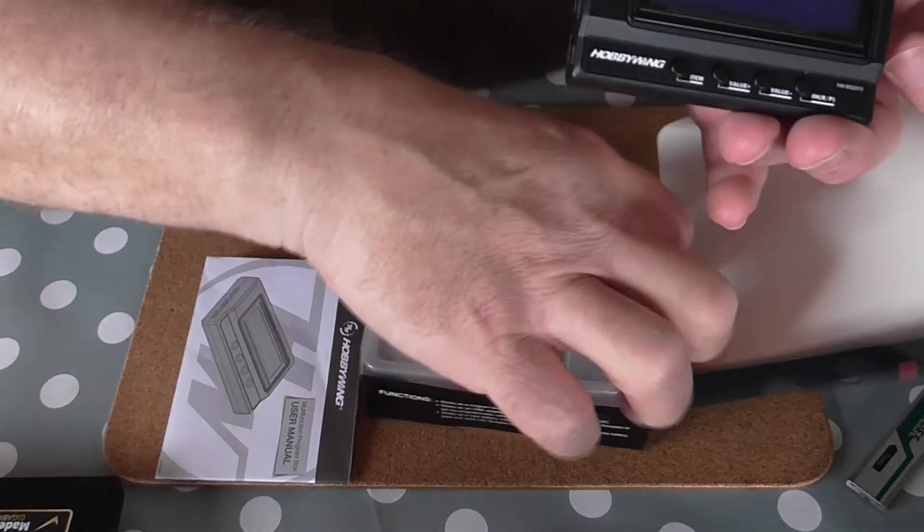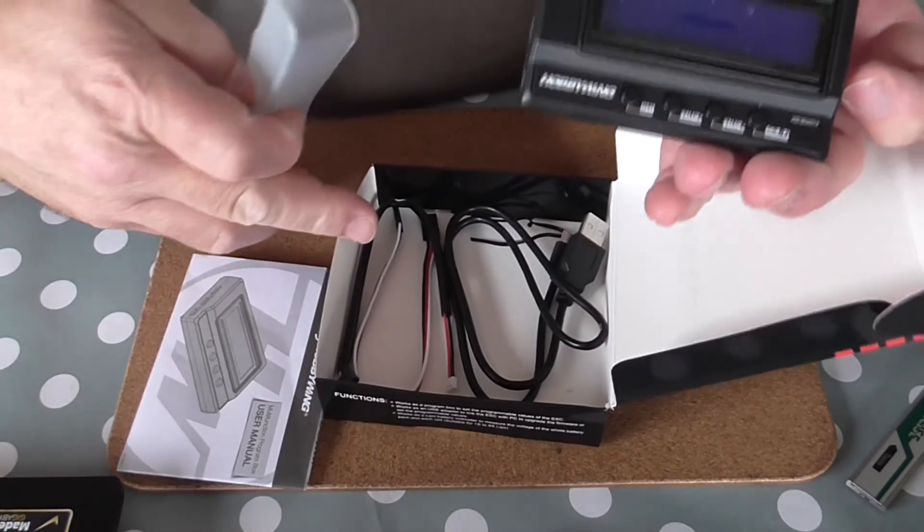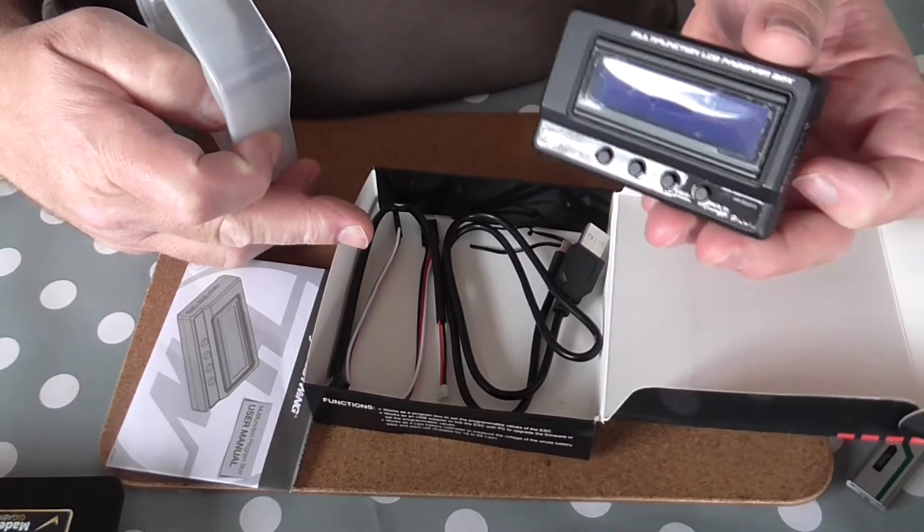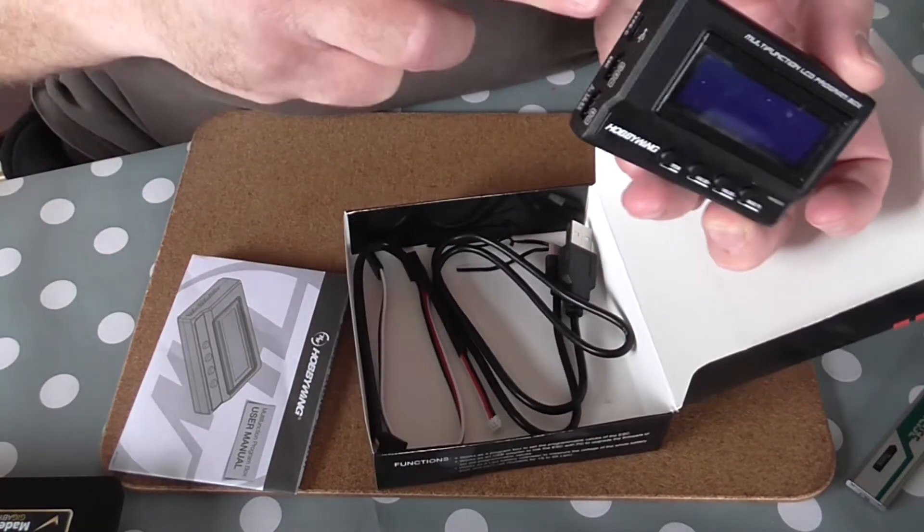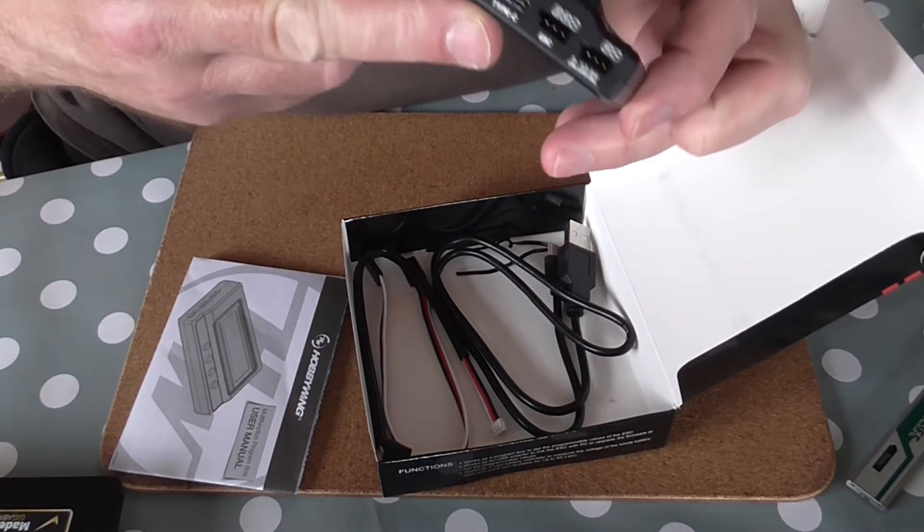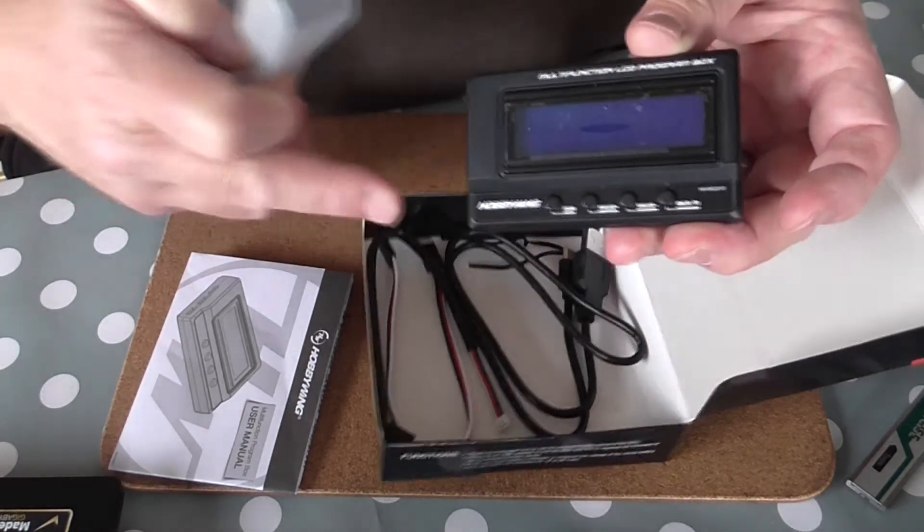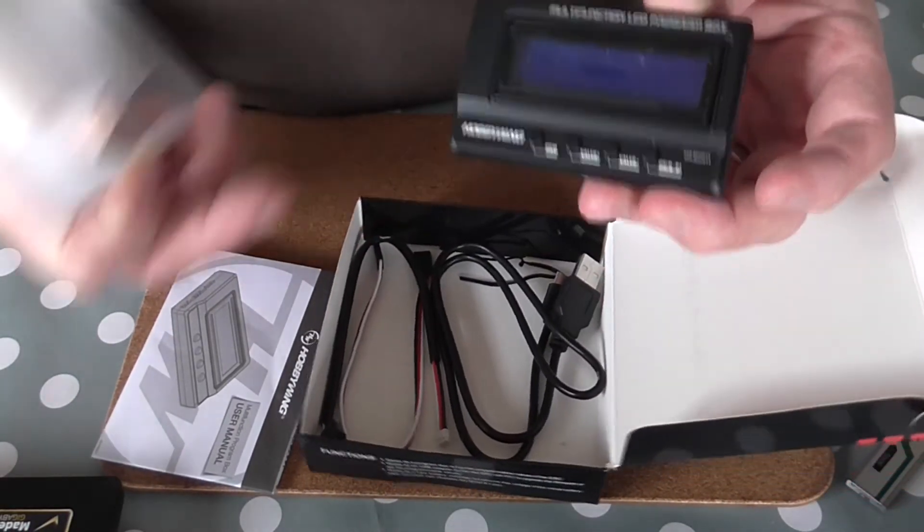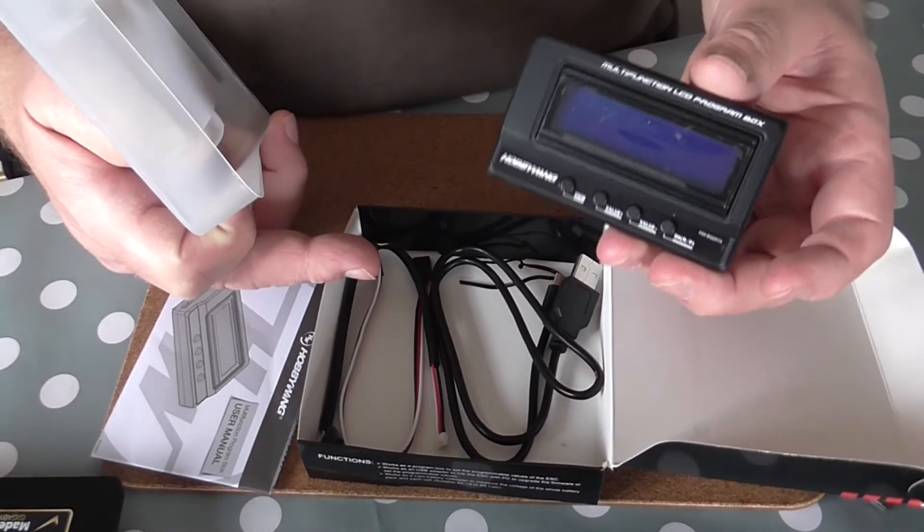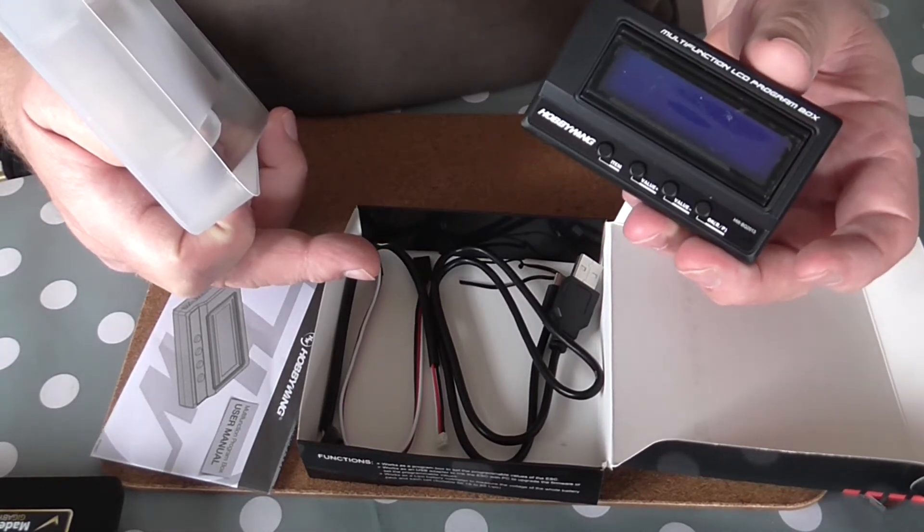It also comes with various cables and a USB cable. USB allows you to plug it in on the side in here. And you can plug that in your PC and update the firmware on it. There's a bit of software available. It's all linked on Hobbyking's website.